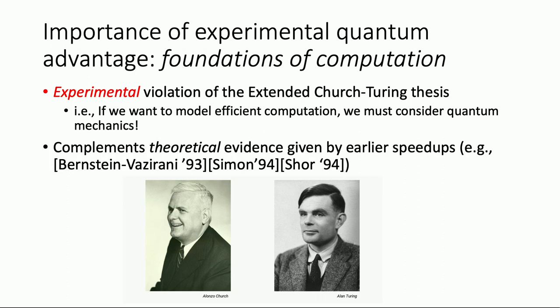This is a really profound statement: the classical Turing machine, the theoretical model of computation that served us well in computer science for nearly a hundred years, is not the right model of computation. It doesn't take into account the nature of physical reality — it doesn't address quantum mechanical processes. If we were to address quantum mechanics, we would get exponential speed-ups over the classical Turing machine. This would complement theoretical evidence from the early 90s — results like Bernstein-Vazirani, Simon's algorithm, and Shor's factoring algorithm.